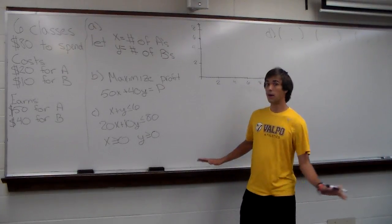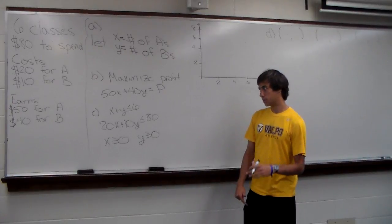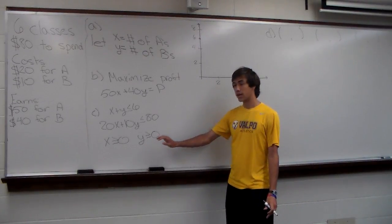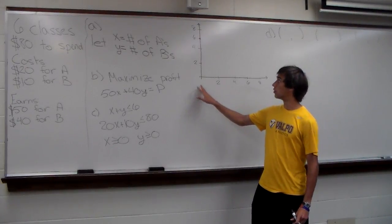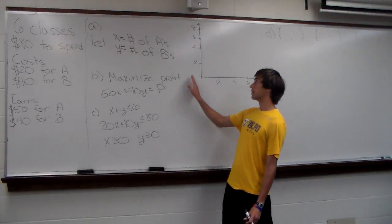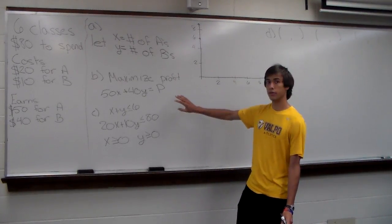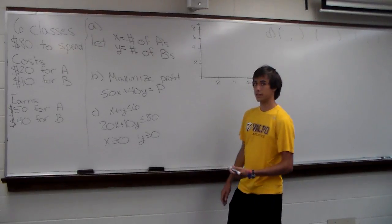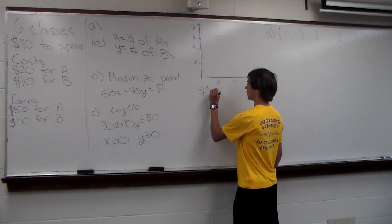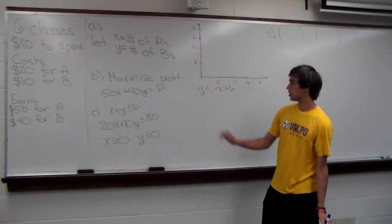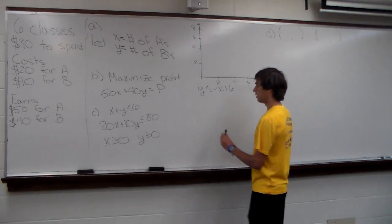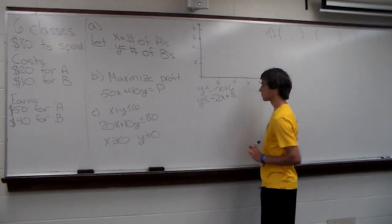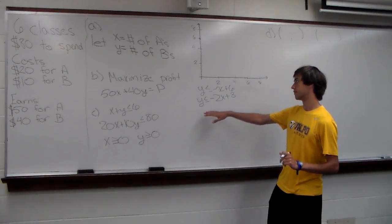Now we need to graph this. Since X and Y must be non-negative, we only look at the first quadrant. We'll convert the two inequalities to slope-intercept form. The first one becomes Y ≤ -X + 6 by subtracting X from both sides. The second becomes Y ≤ -2X + 8 by moving the 20X term and dividing both sides by 10.